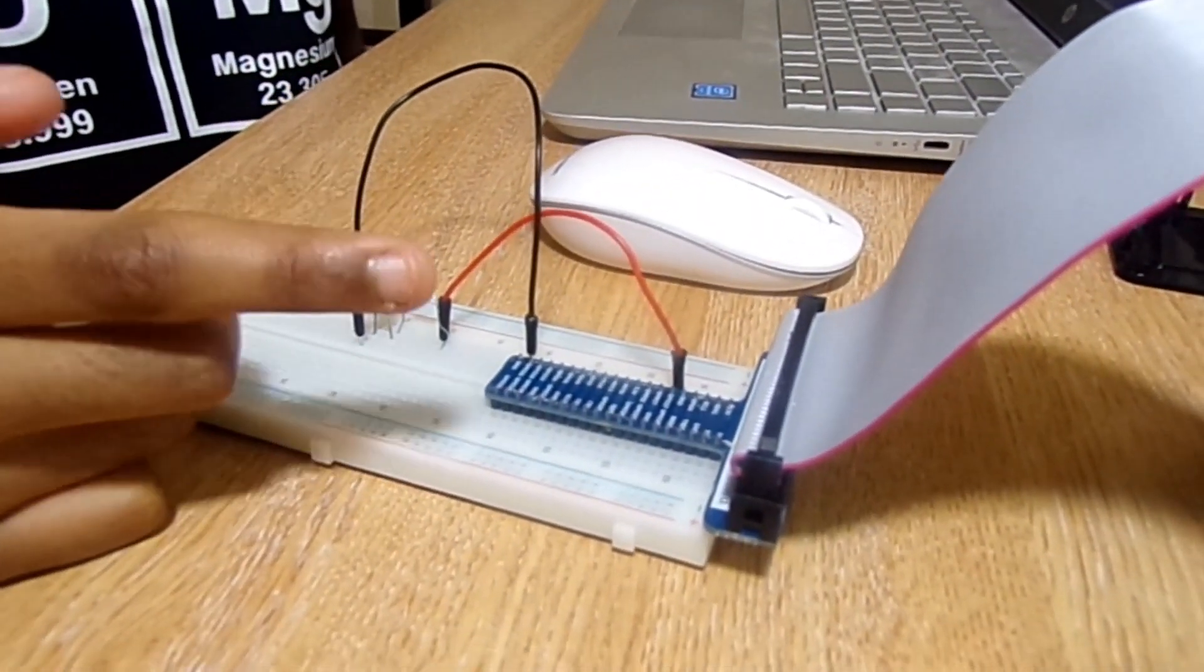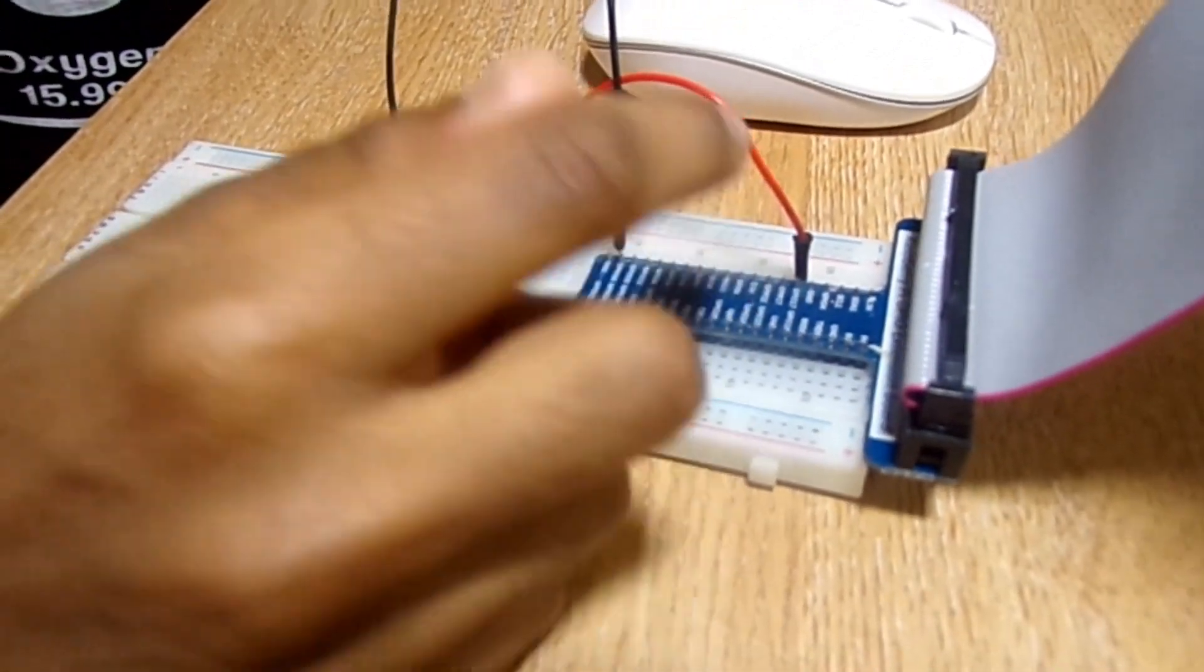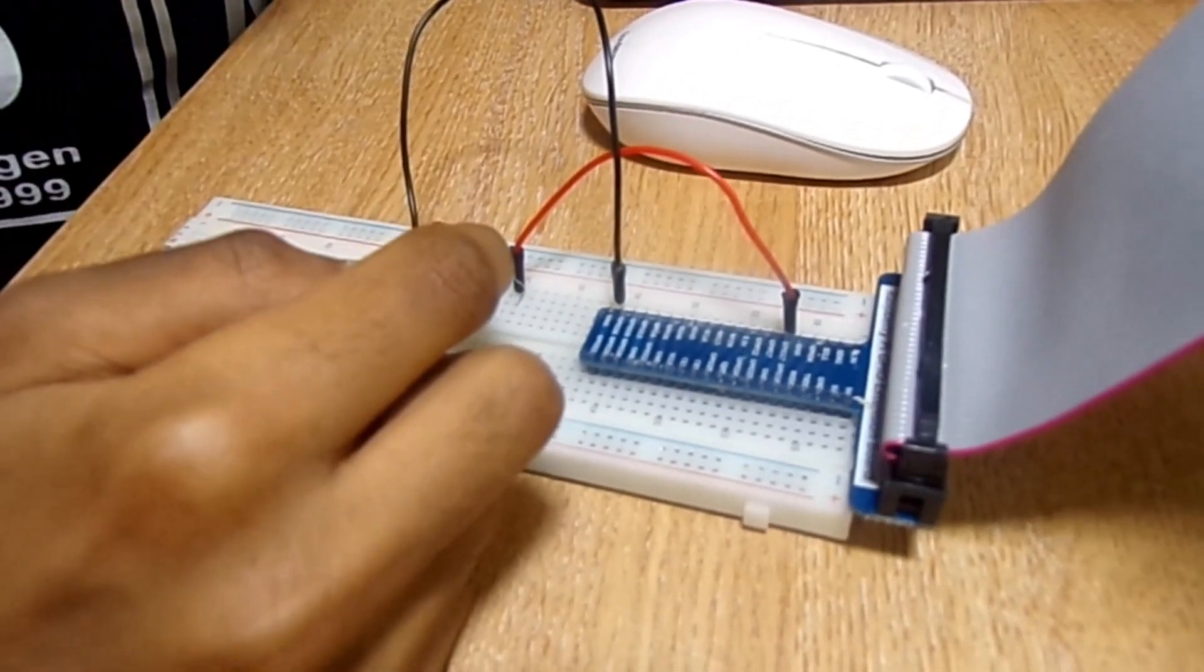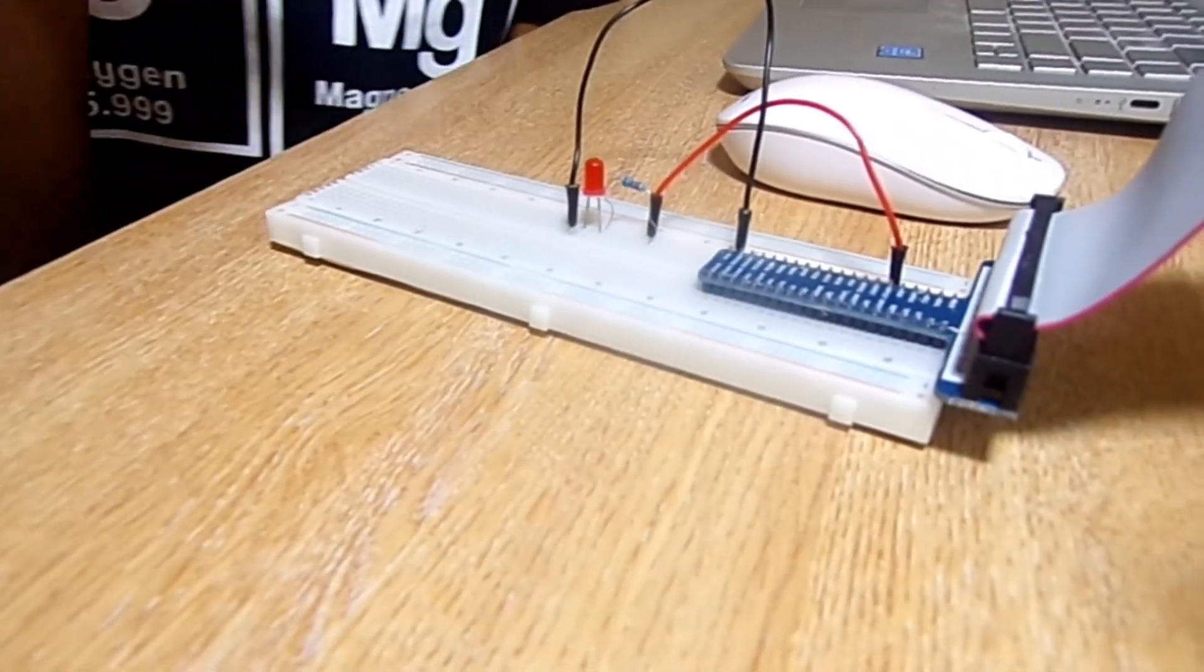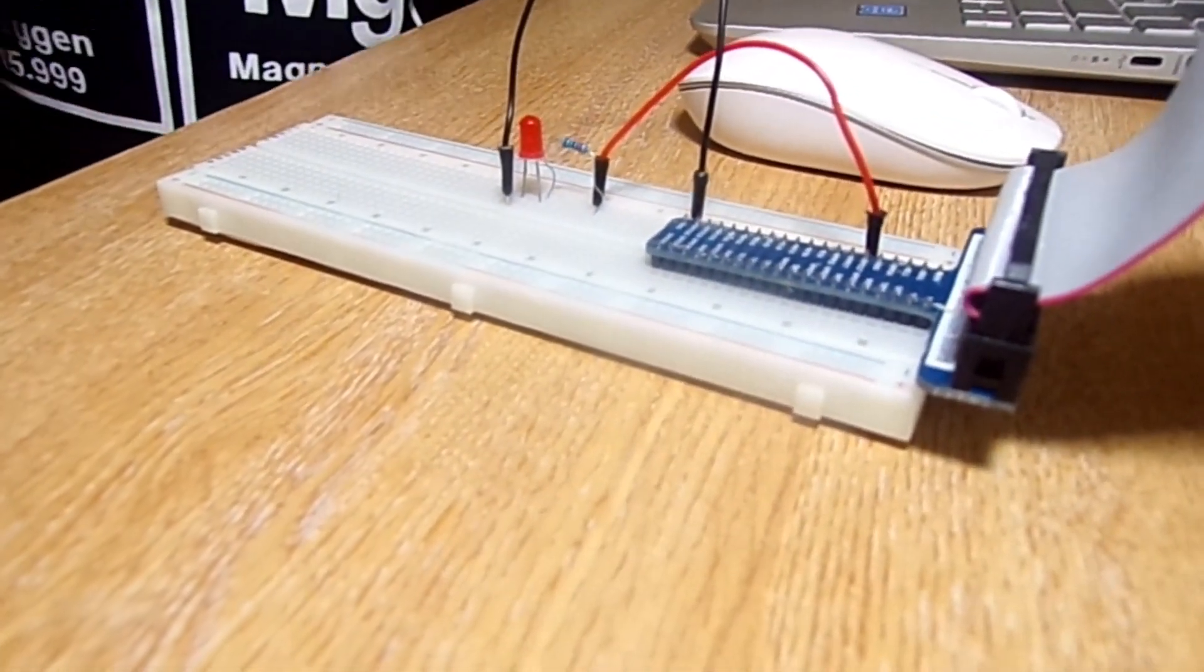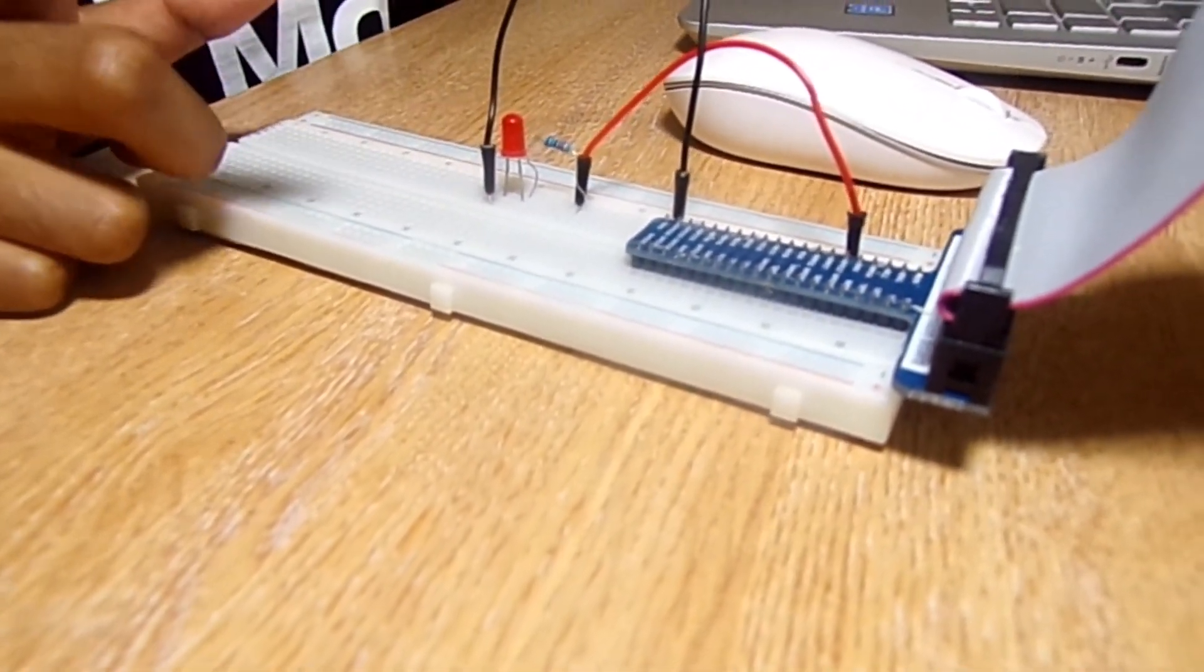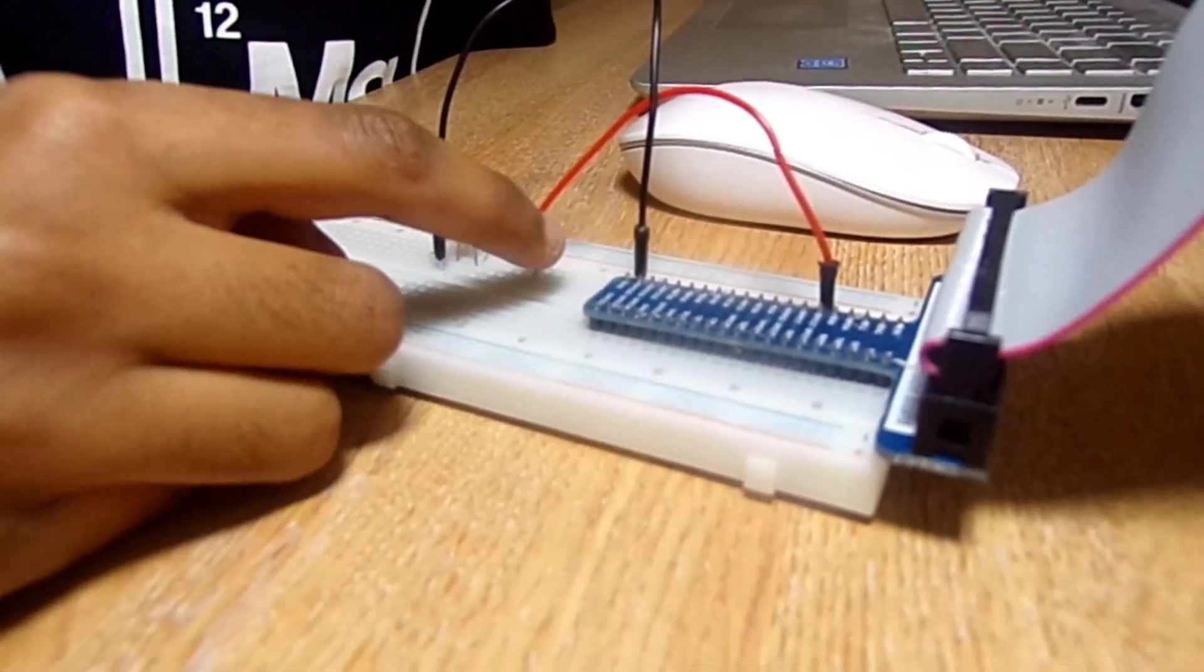Now you need the jumper wire that is connected to the 11th pin, and the other end you have to connect it next to the resistor. The resistor is connected to the anode leg, and the black pin is connected to the cathode pin. And the other end is connected to the ground.